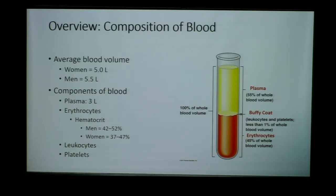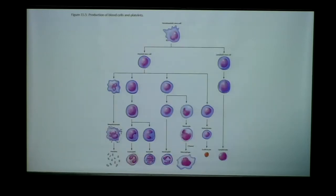The hematocrit is a really important indicator of how many cells you have per your total blood volume, and is clinically important in determining the amount of healthy red blood cells and the oxygen-carrying capacity of our blood.